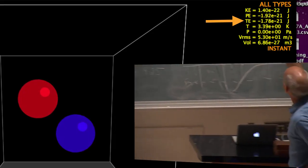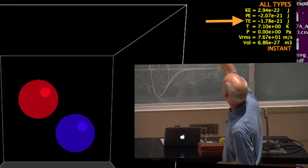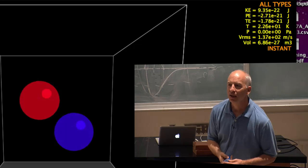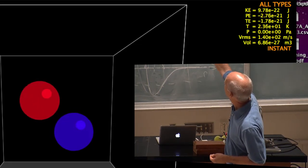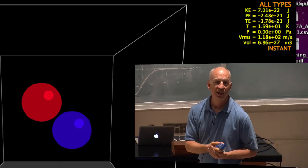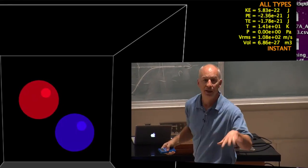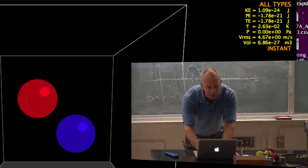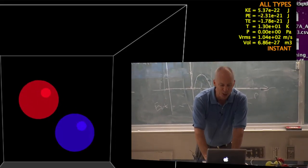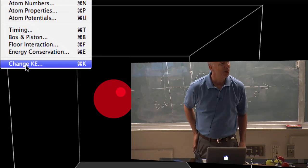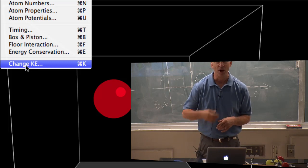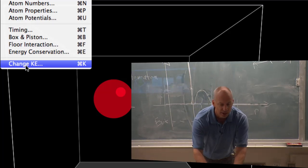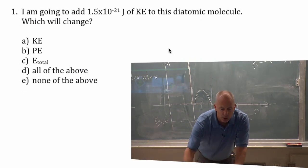So the total energy right now is minus 1.8 times 10 to the minus 21. And my question is going to be, what if I add kinetic energy of 1.5 times 10 to the minus 21? So the total energy is still going to be negative. I'm going to add kinetic energy. Why do I add kinetic energy? Well, that's the only thing this simulation will let me do. It has changed kinetic energy. And so I can add energy in that way, and all it does is it speeds everything up. It adds energy so everything goes faster. So that's the way I'm going to add energy, but I have a question for you.